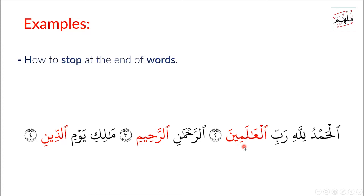I don't pronounce 'al-alameen' with a vowel — it's wrong to say 'al-hamdulillahi rabbil alameen-a.' It's also wrong to stop saying 'al-alameen-i' or 'al-alameen-u.' When we stop at the end of ayahs, we must stop on sukun. The correct recitation is: Alhamdulillahi rabbil alameen. Ar-Rahman ar-Rahim. Maliki yawmi al-deen.